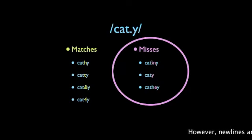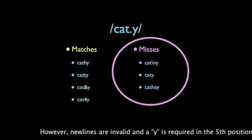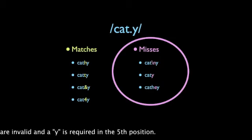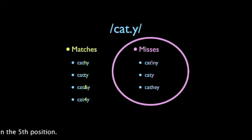Except that the fourth character cannot be a new line, which is backslash N. The fifth character must be the letter Y.